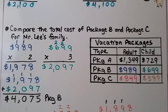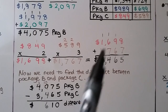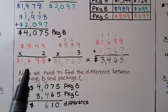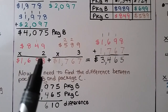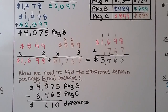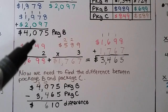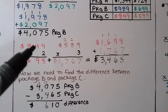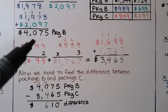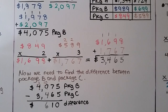Now we need to find the amount for package C: 2 adults at $849 each, so $849 times 2. We do 9 times 2, which is 18 — regroup the 1, put the 8 down. 2 times 4 is 8, plus 1 more is 9 — put the 9 down. 2 times 8 is 16. That's $1,698 for the adults.